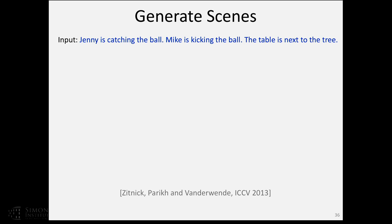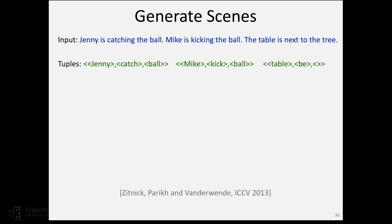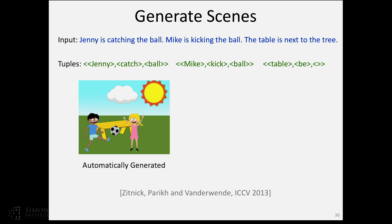As an illustration of what we can do with this mapping, we can take as input a short description — like 'Jenny is catching the ball, Mike is kicking the ball, the table is next to the tree' — parse it with basic NLP techniques, and then automatically generate a scene from scratch that depicts these sentences. So we can take a sentence as input and output a scene in this virtual world that corresponds to its meaning.